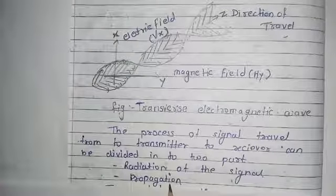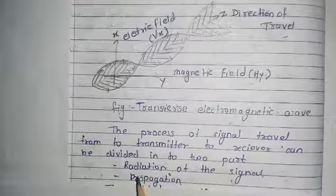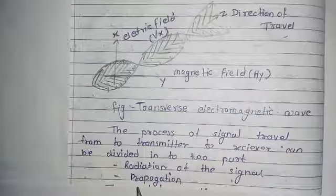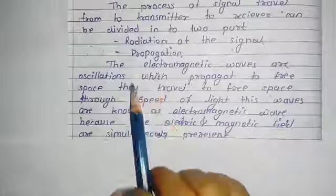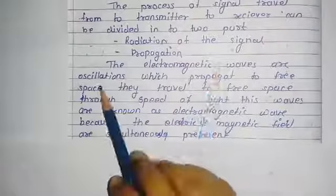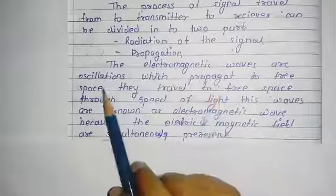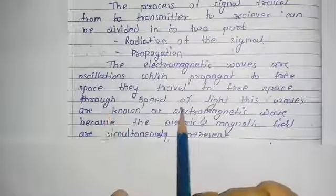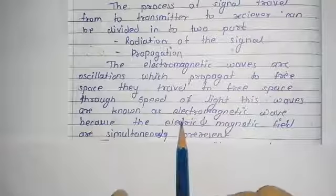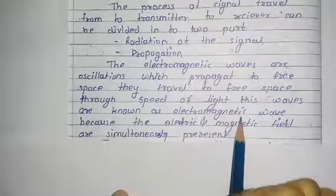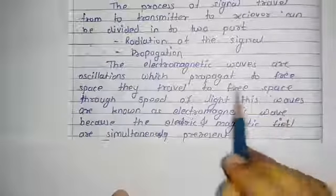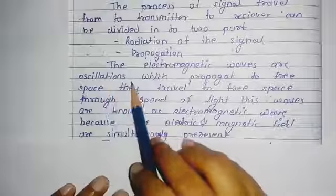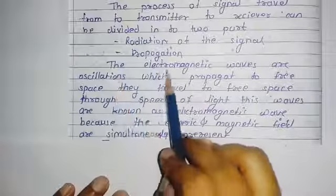The electromagnetic waves which are transmitted from transmitter to receiver travel at the speed of light. These waves are known as electromagnetic waves, and they propagate through free space at the speed of light.